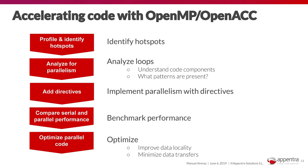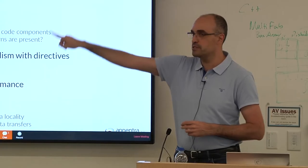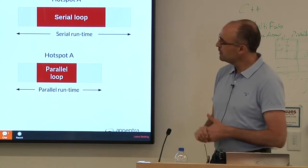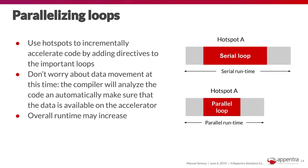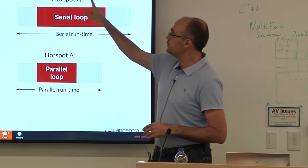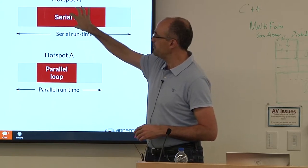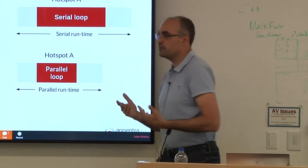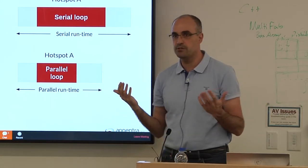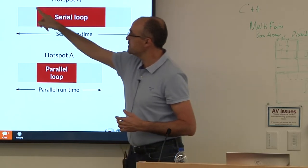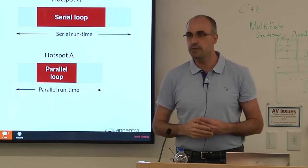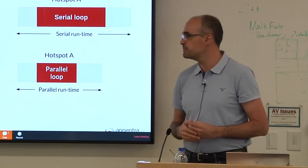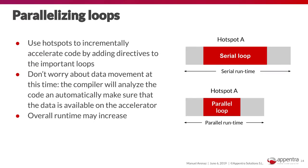When you parallelize, you accelerate the hot spot part of the code. But to get peak speedups, you also need to parallelize the remaining sequential regions — otherwise those become the bottleneck preventing you from achieving peak performance in real applications. This is the essential effect of parallelizing loops.